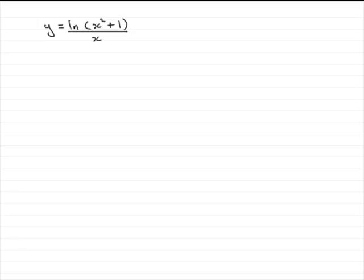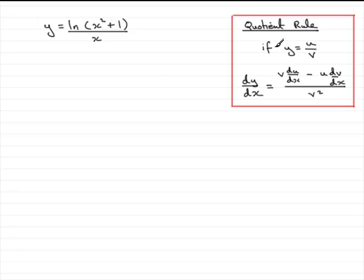If you're not familiar with the quotient rule, here it is. If you've got y equals u divided by v, where u and v are functions of x, our u would be the natural log of x squared plus 1 and v would be x. Then it can be shown that dy/dx equals the bottom of the fraction times the differential of the top, minus the top times the differential of the bottom, all divided by the bottom squared. Let's put this into practice.